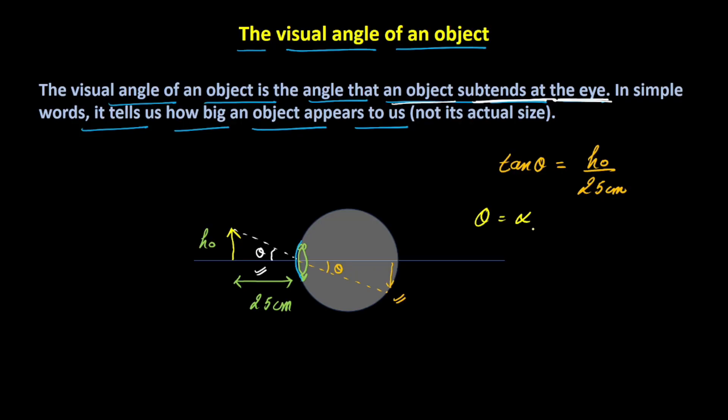Now, let's say if theta equals alpha, so I can say tan alpha would be equal to H0 divided by 25 cm. And in reality, this angle is very, very small. So we can say that if the angle is very small, tan alpha would approximately be equal to alpha. Thus, we can say alpha is equal to height of object divided by 25 cm.